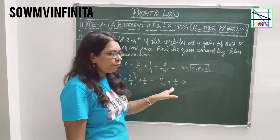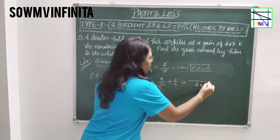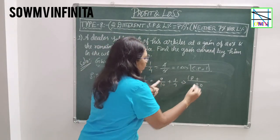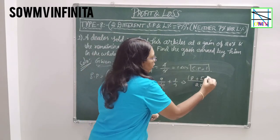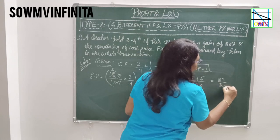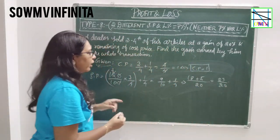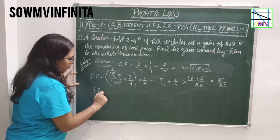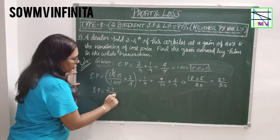LCM of 10 and 4 is 20. So: 9 × 2 = 18, plus 1 × 5 = 5. Therefore 23/20 is the SP value. So SP = 23/20.